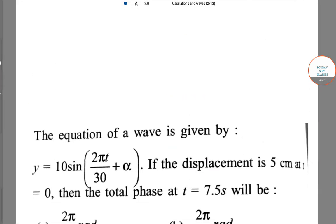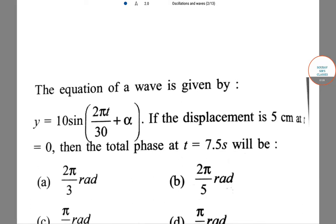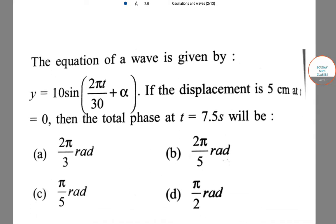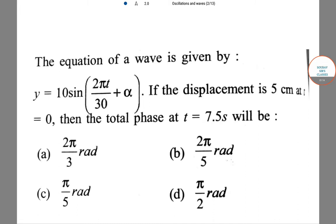Next question: the equation of a wave is given by y = 10 sin(2πt/30 + α). If the displacement is 5 cm at t = 0, then the total phase at t = 7.5 seconds will be - this kind of question comes in exams.